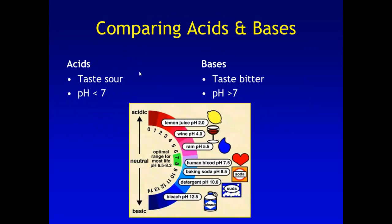So as we are comparing acids and bases, acids have a sour taste to them and a pH of less than 7. Bases taste bitter and have a pH of greater than 7. So acids, we tend to eat a lot of acids. They taste tart, and we like that tart, tangy taste.